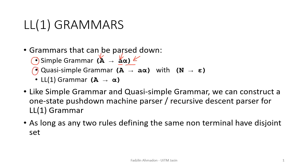In quasi-simple grammar, the left-hand side starts with a single non-terminal and on the right-hand side, it follows the same rule as simple grammar. However, we can also have rules that can be derived to epsilon, and this type of rule we call a nullable rule.